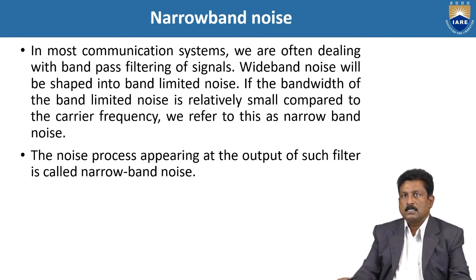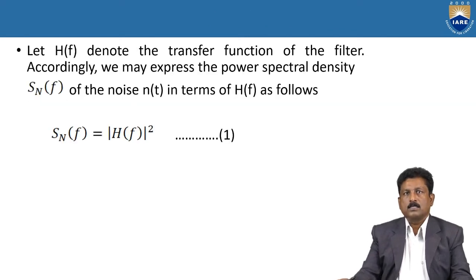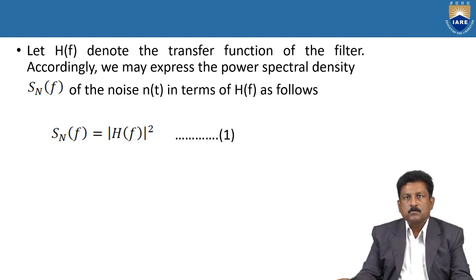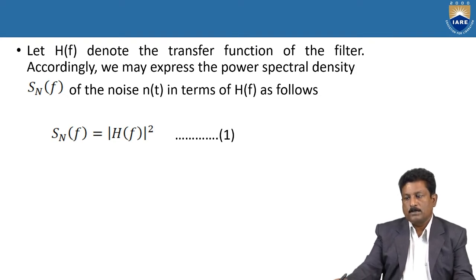This is the definition for Narrowband Noise. We assume that H(f) denotes the transfer function of the filter. Accordingly, we may express the power spectral density S_n(f) of the noise n(t) in terms of H(f) as: S_n(f) = |H(f)|². This is the Narrowband signal noise.